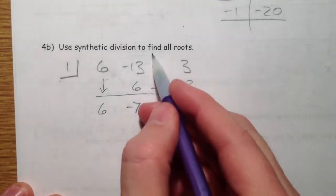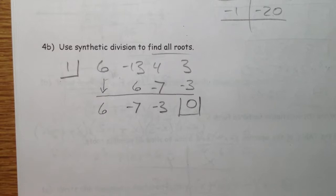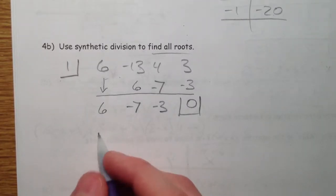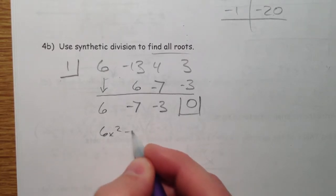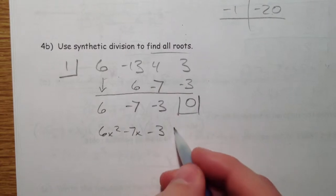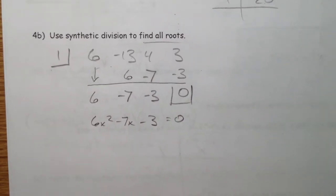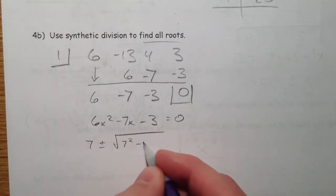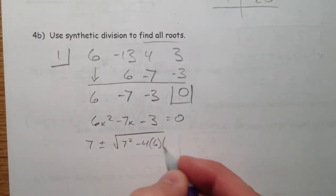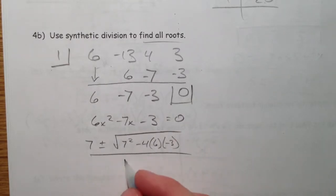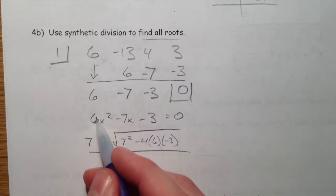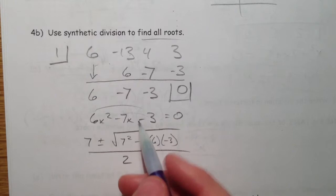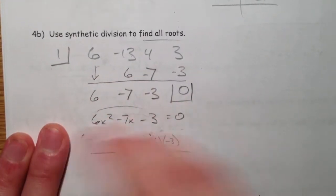So, use synthetic division to find all of the roots. This is 6x squared minus 7x minus 3, and so I set the rest of this equal to 0 and I solve it. So 7 plus or minus the square root of 7 squared minus 4 times 6 times negative 3, quadratic formula. If you're able to factor it, factor it. But... Oh actually, let's do that now that I think of it.